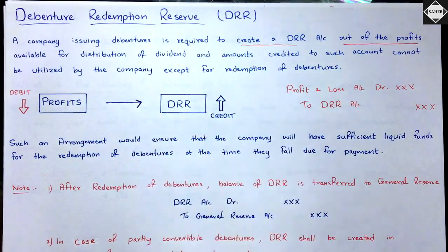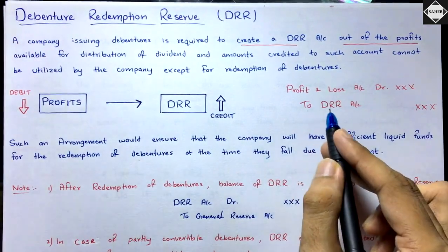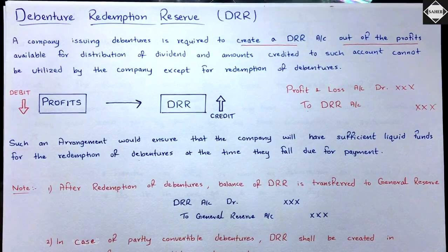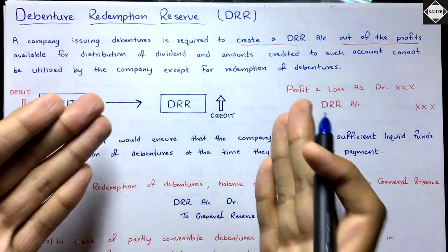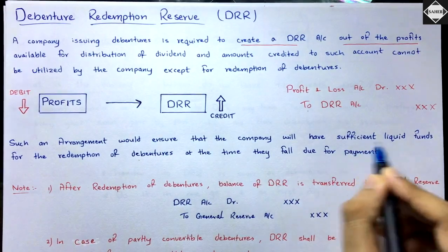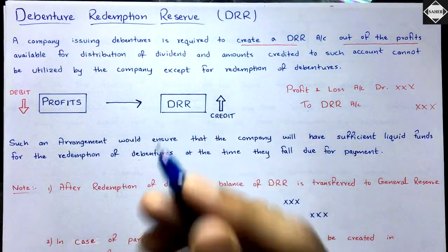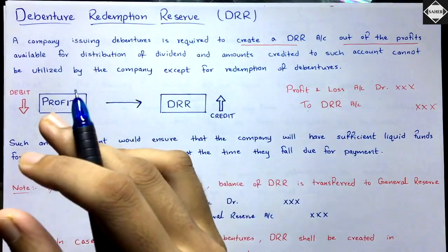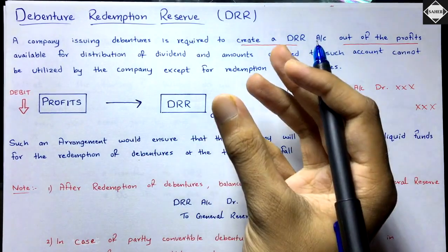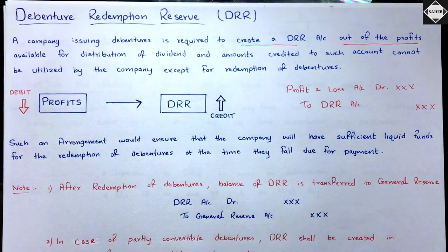Money transferred to DRR cannot be used for any purpose other than redemption of debentures. The logic is simple: the company will have sufficient liquid funds at the time of redemption to repay debenture holders. Creating DRR also shows the company's genuineness to debenture holders — when they see the financial statements and find a special reserve created only for them, they feel their money is safe and will be returned at maturity.